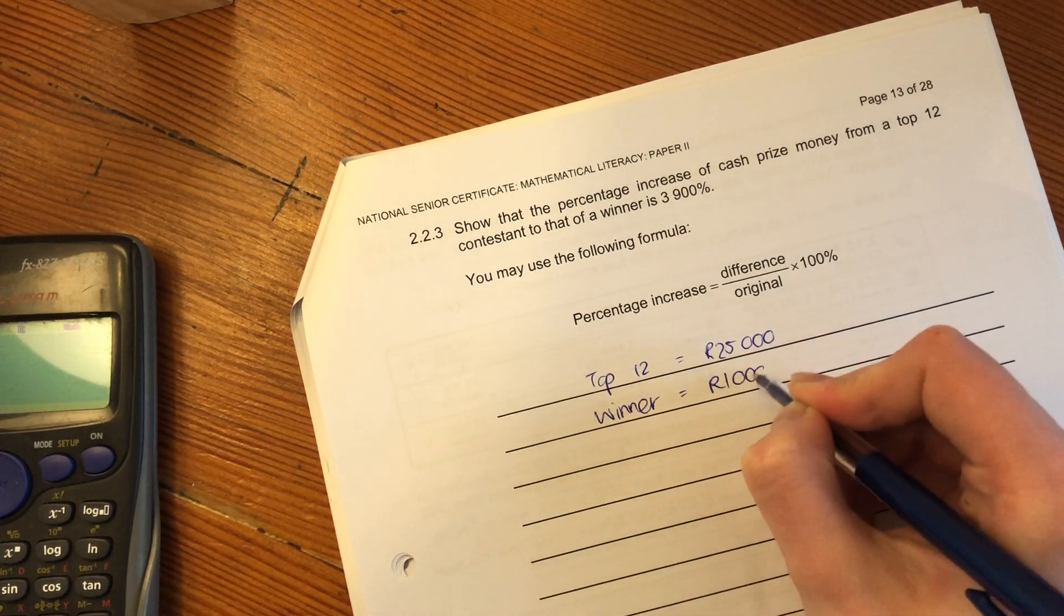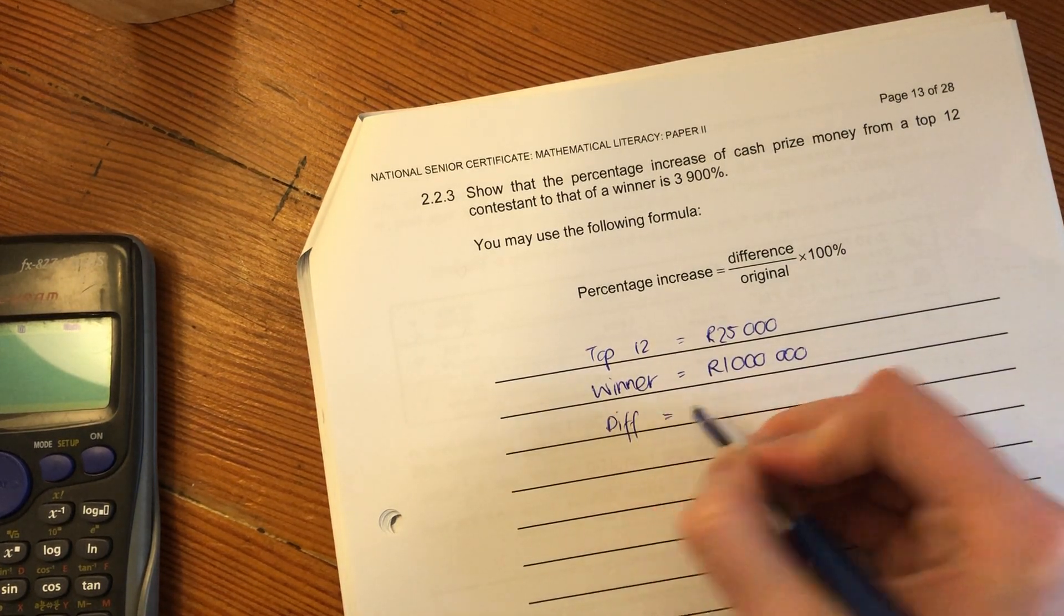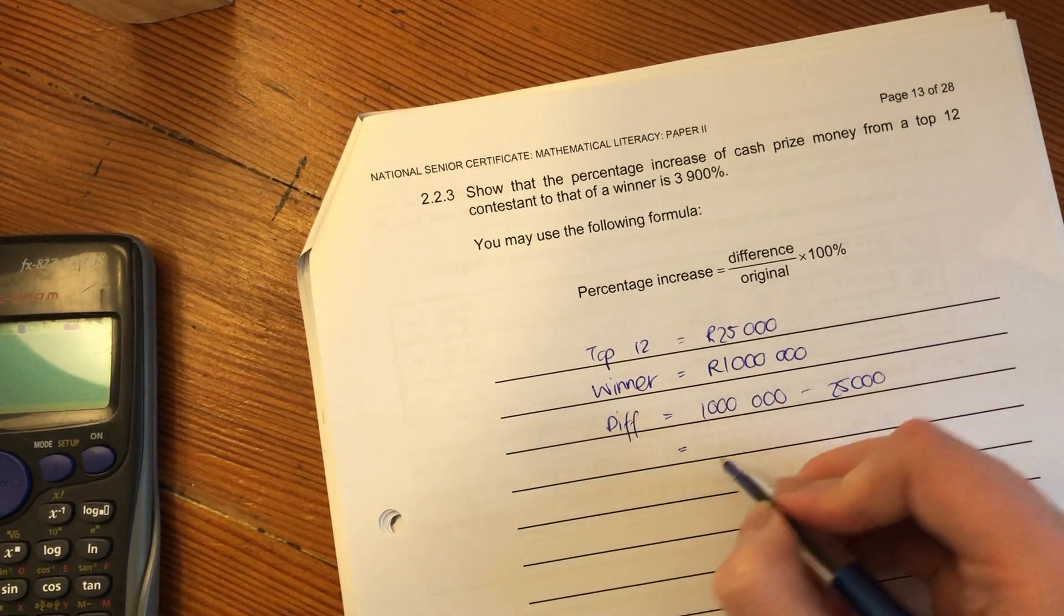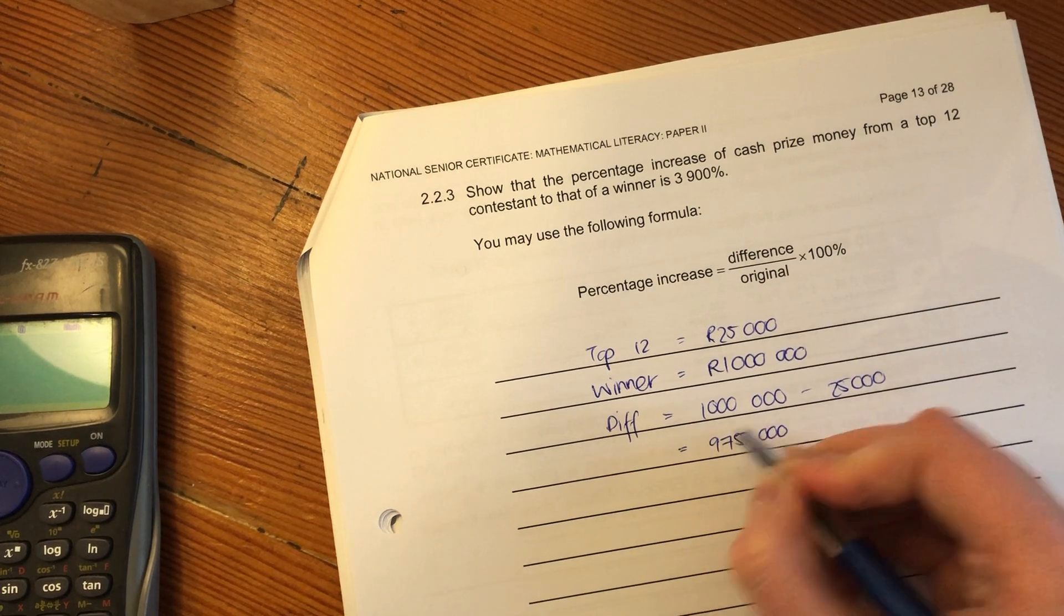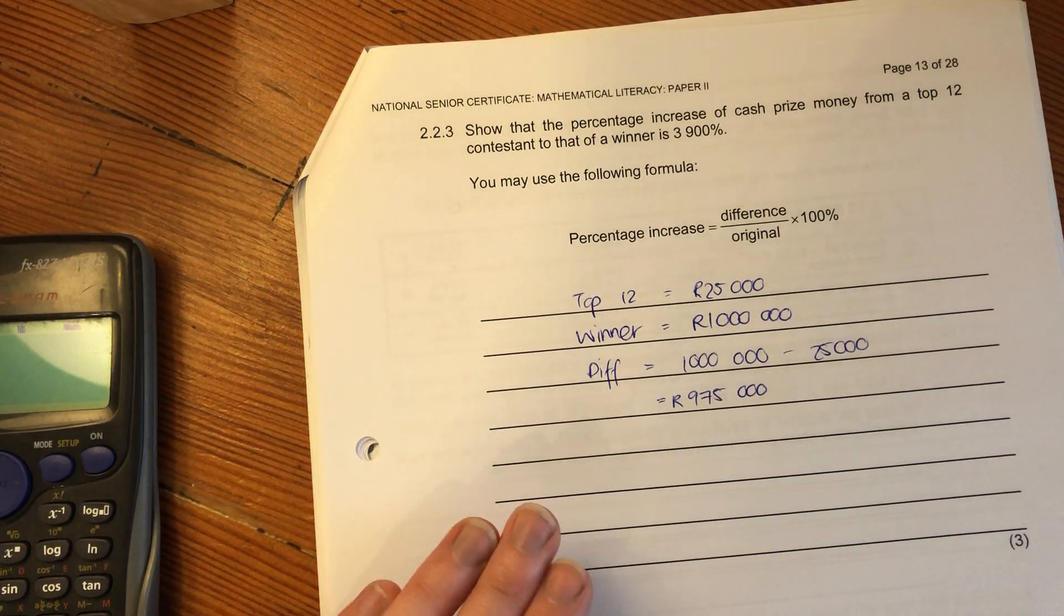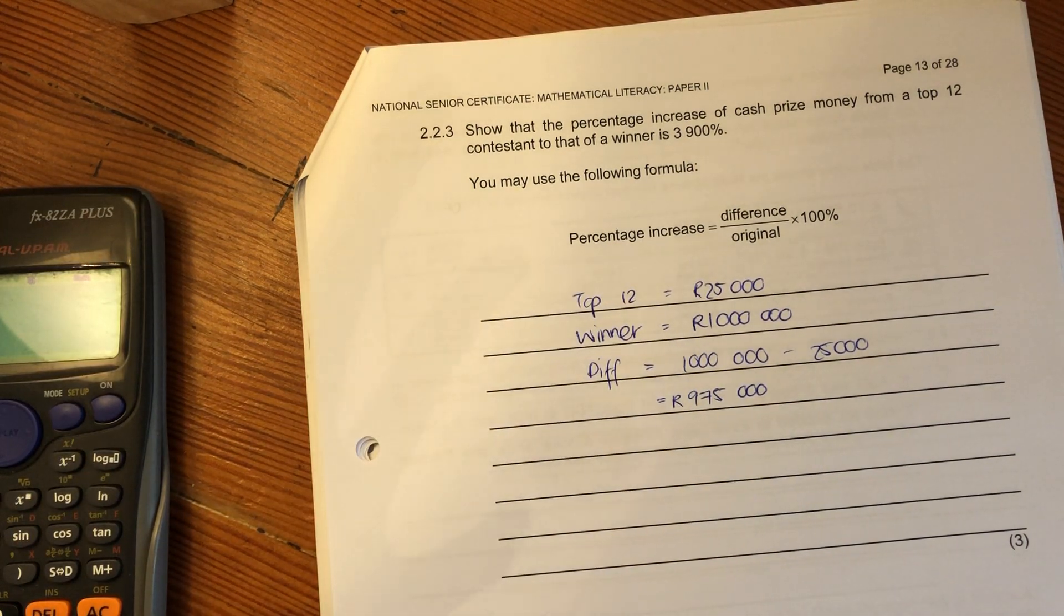What is the difference? The difference is 1 million minus 25,000, which is 975,000. You could put that into your calculator. I would generally put it in your calculator just because sometimes in exams we lose our cool and make mistakes that we wouldn't really make otherwise.